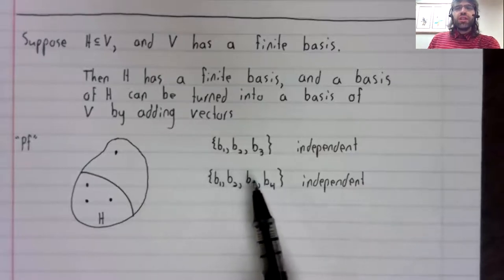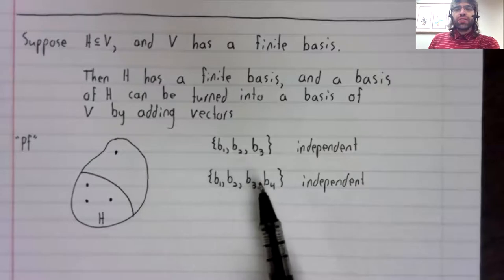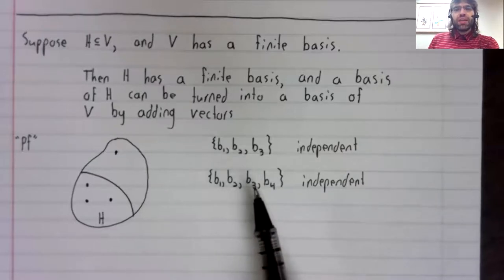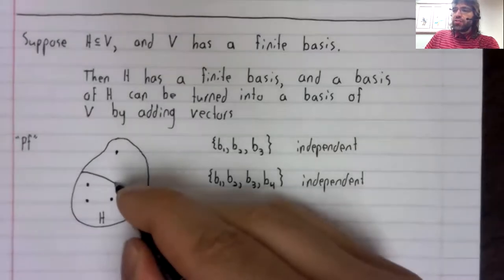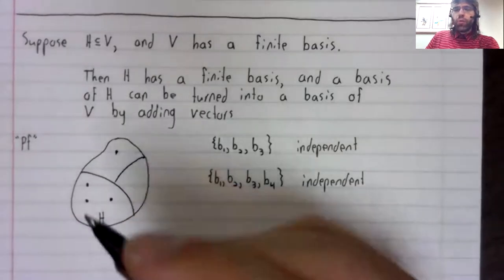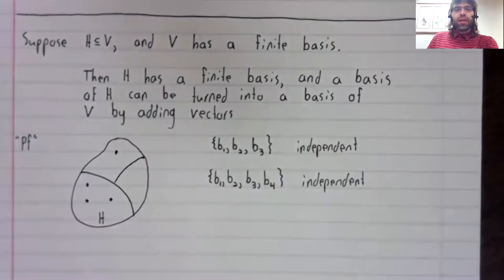Well, this set is linearly independent. If it's not the basis of V, it's because it doesn't span V. So now we have four vectors, and we're spanning more of V than we used to, but we're still not spanning all of V.